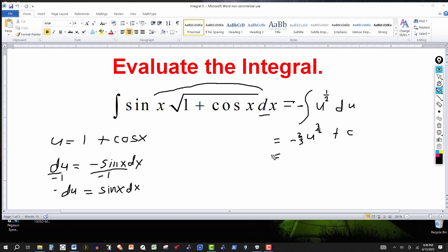And then going back to the original variable. So let's just put a minus two-thirds here. And in place of u, we put the one plus cosine x to the three halves power plus the constant of integration. And this is our final answer.